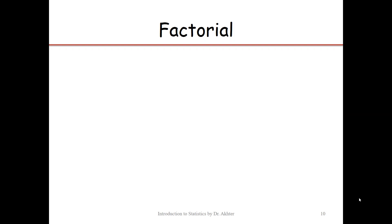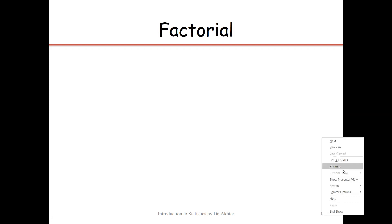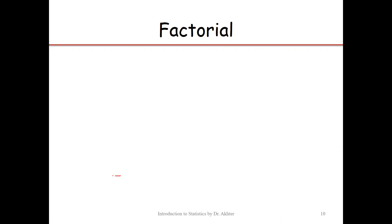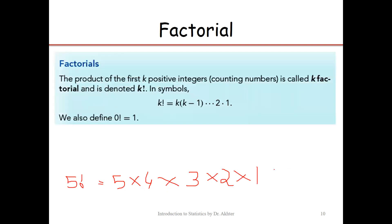Factorials are basically products. Suppose we want to compute 5 factorial. 5 factorial means 5 × 4 × 3 × 2 × 1. There are two ways to represent 5 factorial — one common way is to write 5 followed by an exclamation sign. In general, k factorial is defined as k × (k−1) × (k−2) × ... × 3 × 2 × 1, and finding the value of this product gives k factorial.